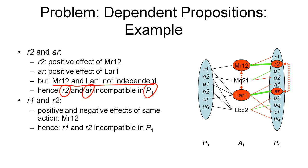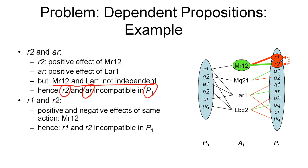Another example is to look at propositions R1 and R2 in proposition layer P1. Clearly, these two propositions are a positive and negative effect of the same action. So if we include this action in our plan, we can't have R1 and R2 both be true in P1. So again, they are incompatible in this proposition layer — R1 and R2 are incompatible in proposition layer P1.